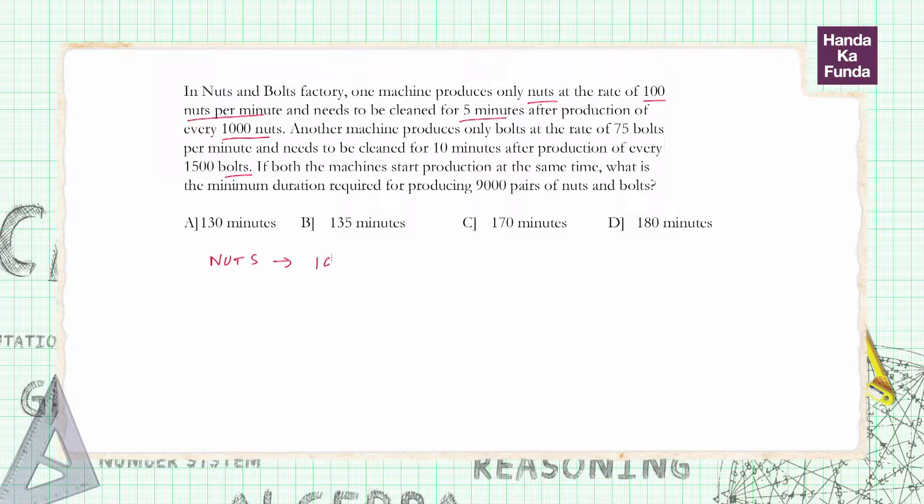That 1000 nut batch will take 10 minutes to produce at the rate of 100 nuts per minute, plus it will require 5 minutes of cleaning time, which essentially means one batch of 1000 nuts takes 15 minutes.